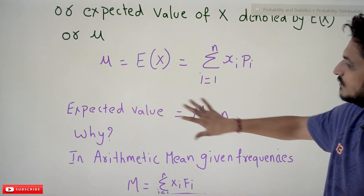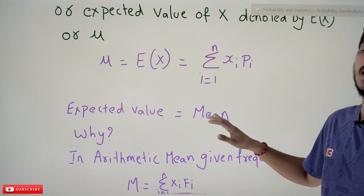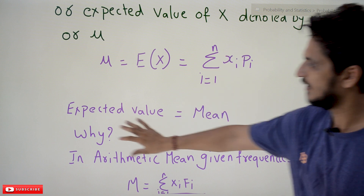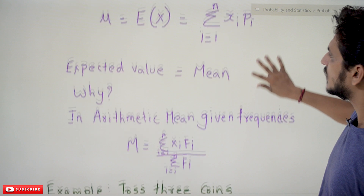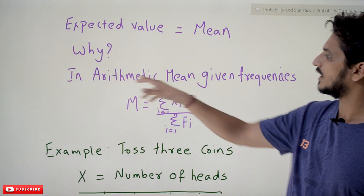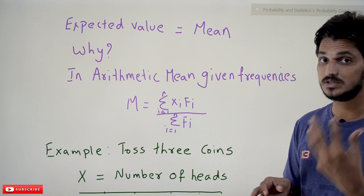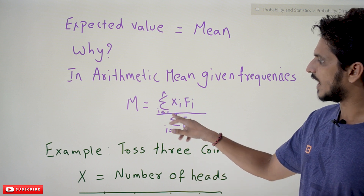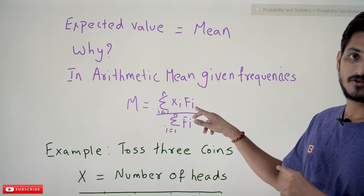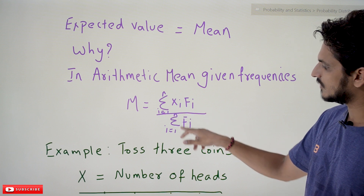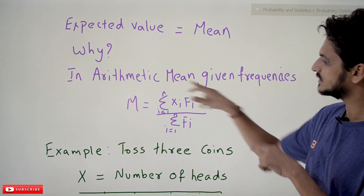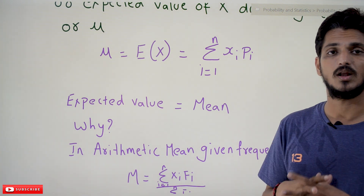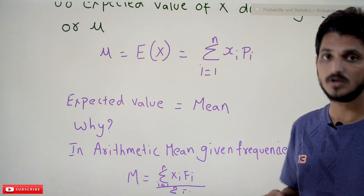We are saying that this expected value is similar to the arithmetic mean which we calculated in our first classes. The key point is: why is it equal to the arithmetic mean? When we discussed arithmetic mean with frequencies, the equation used was: mean = Σ (i=1 to n) XᵢFᵢ divided by Σ (i=1 to n) Fᵢ. Here we are seeing a different equation, but we are saying both are equal. Let's try to understand this with an example.